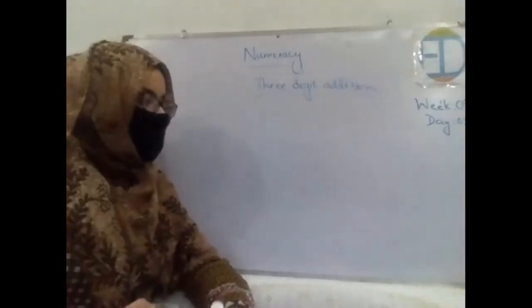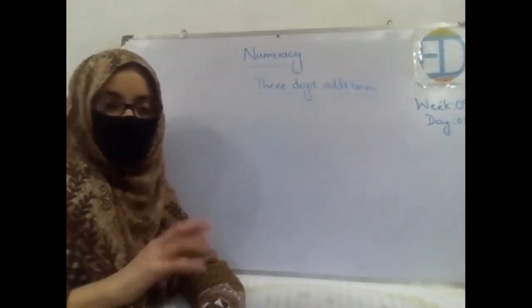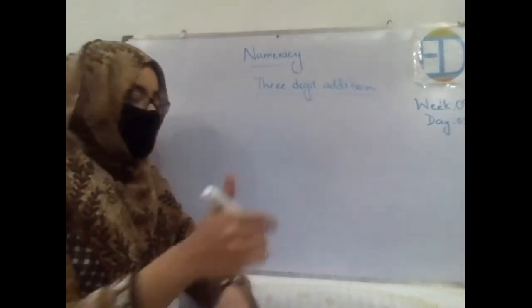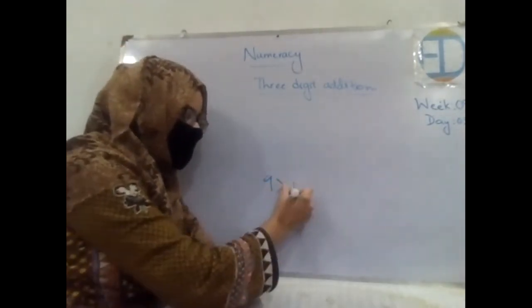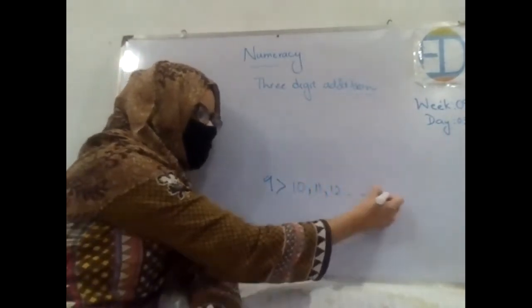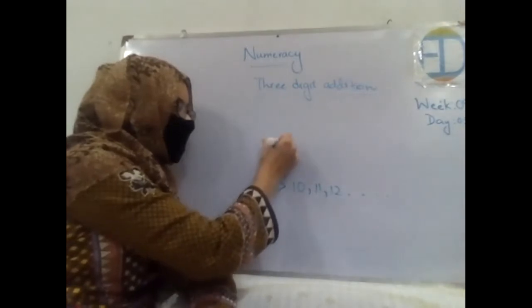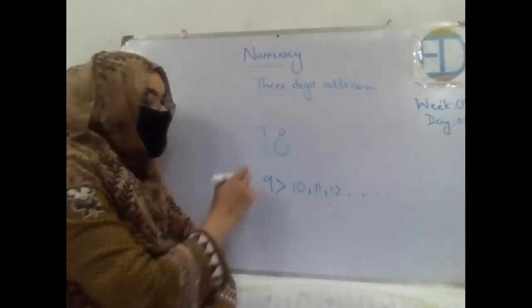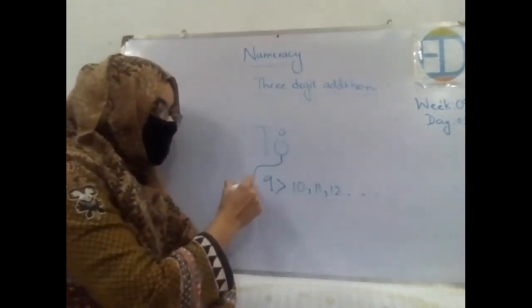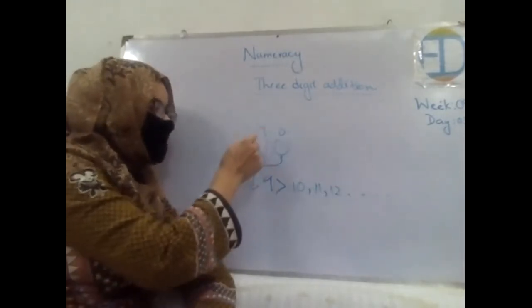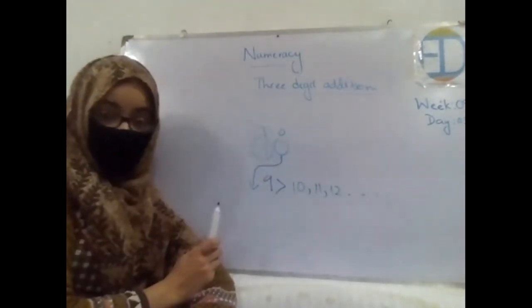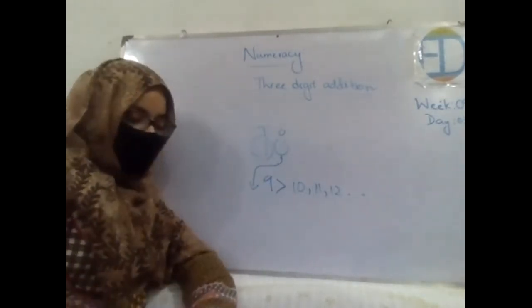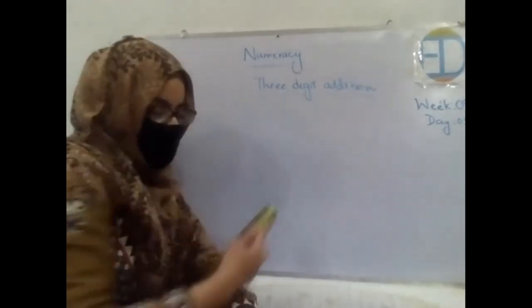Now you've seen what we do — the same way we practiced in two-digit addition. Whenever the sum of two numbers is greater than 9 — it can be 10, 11, 12, and so on — we write the ones digit below the ones column and carry the tens digit to the top of the next column. This is how we do the carrying over. Now I'm writing a question in front of you — look at the board carefully: 348 plus 185.